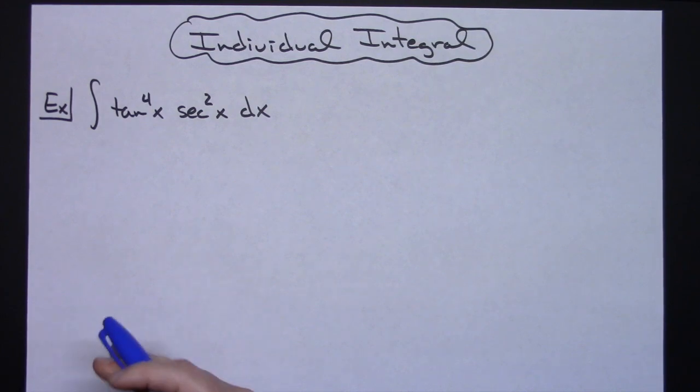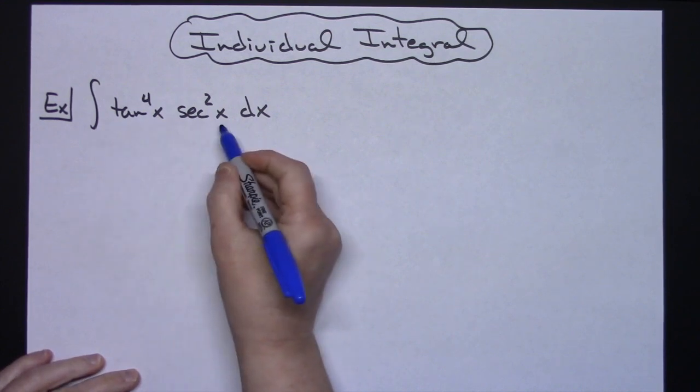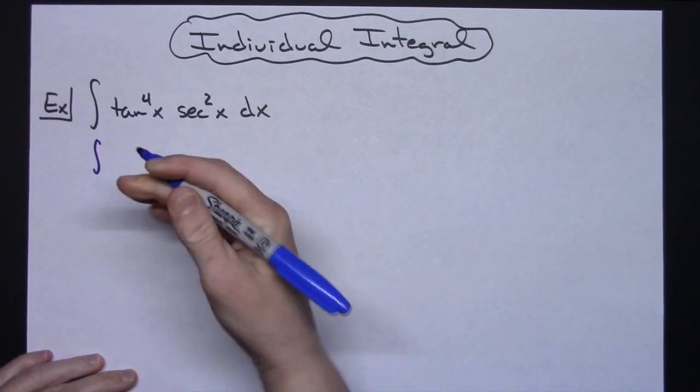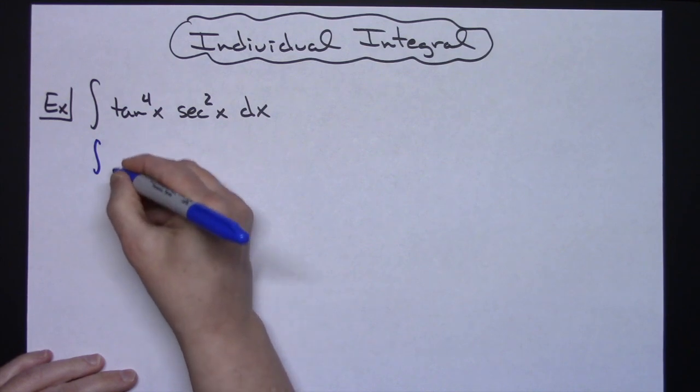a lot of people struggle with exactly what they should let u be. My suggestion is that sometimes rewriting the original integral allows you to more easily see what you're going to have to let your u be.